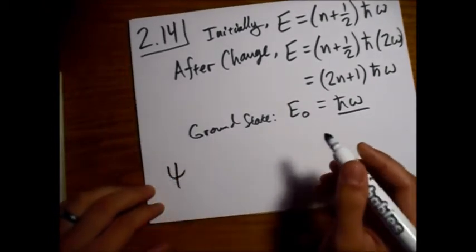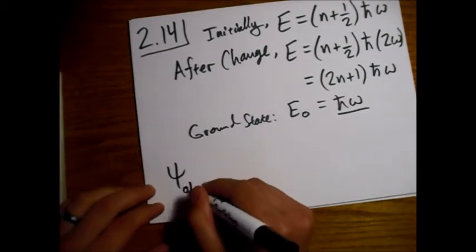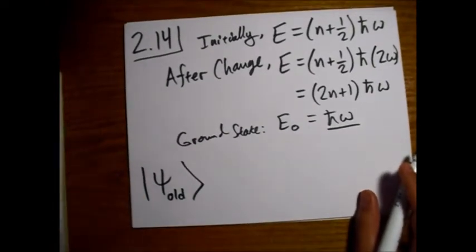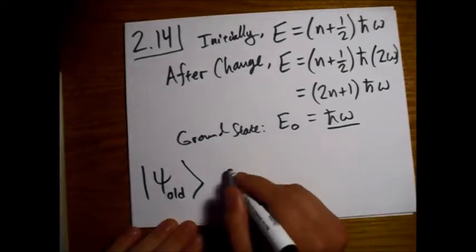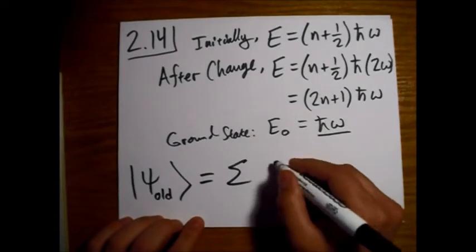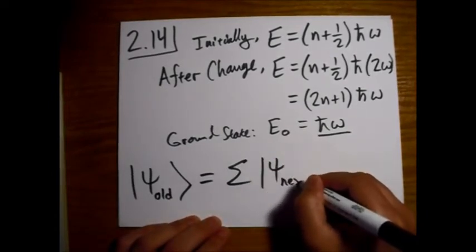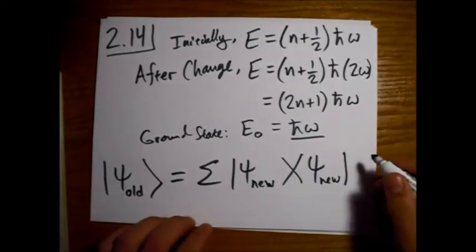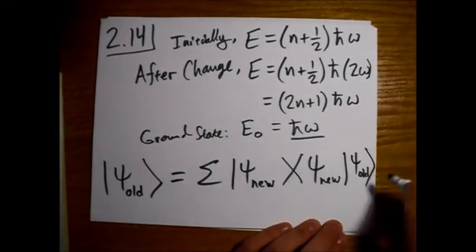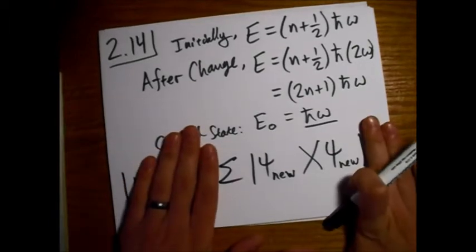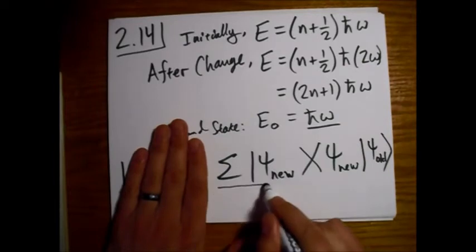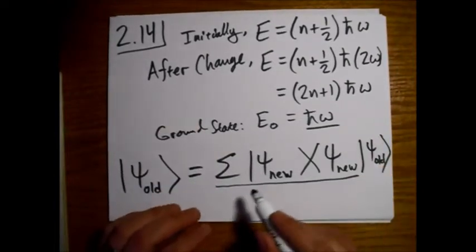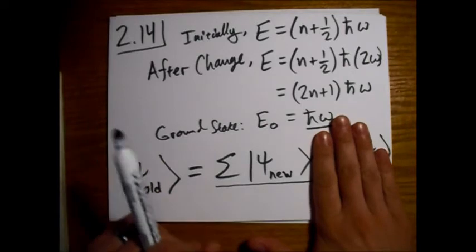So, because these are complete, you know, they're orthogonal and complete and all that, we can write the old wave function in terms of the new one. So if we write out psi old, I'm going to use the bracket notation, which I guess Griffiths hasn't covered yet, but we'll explain it.